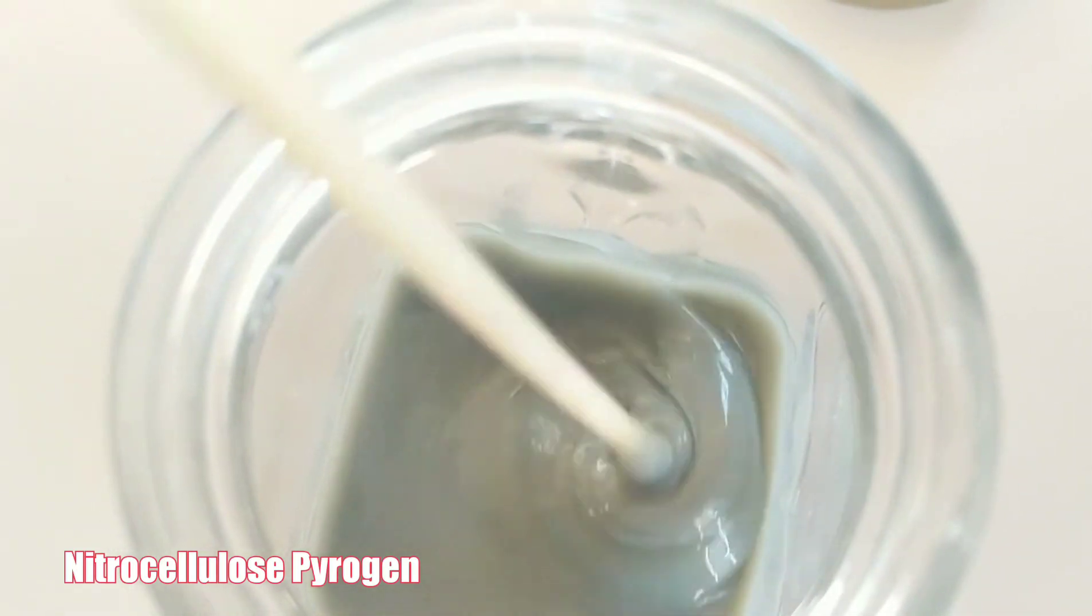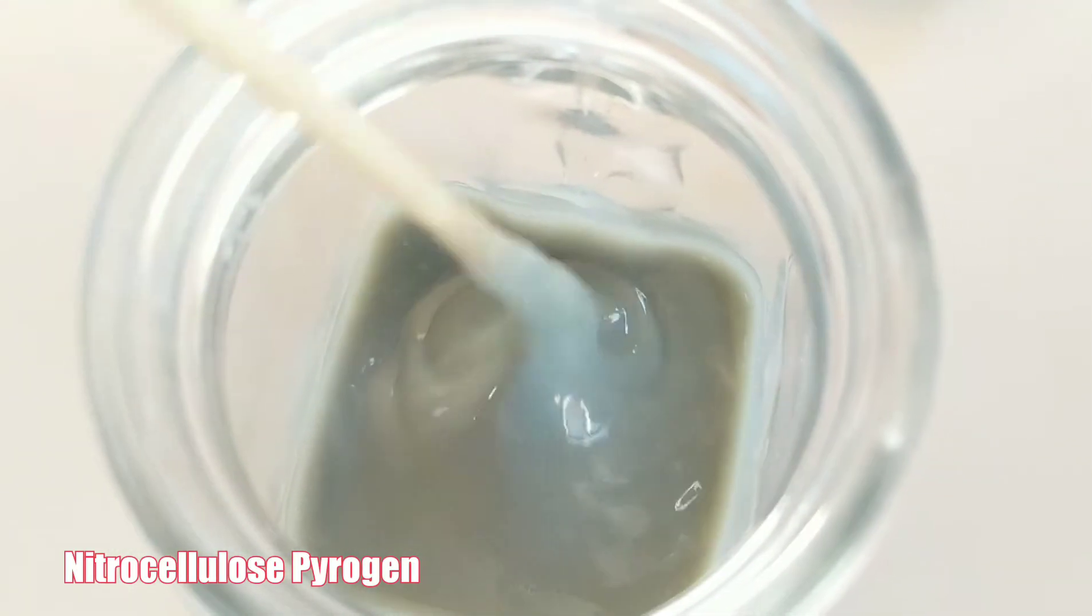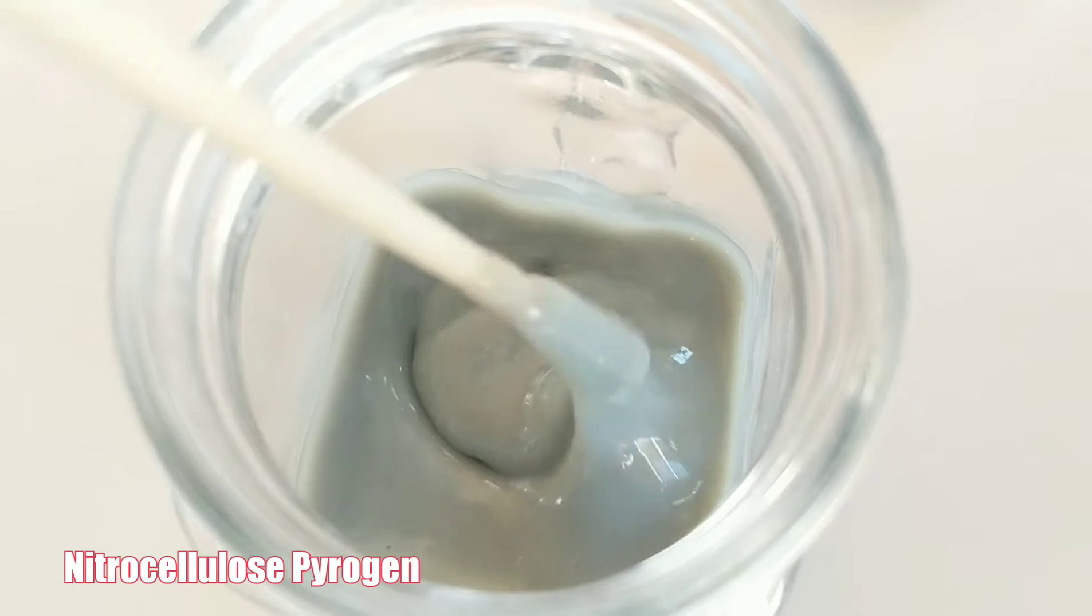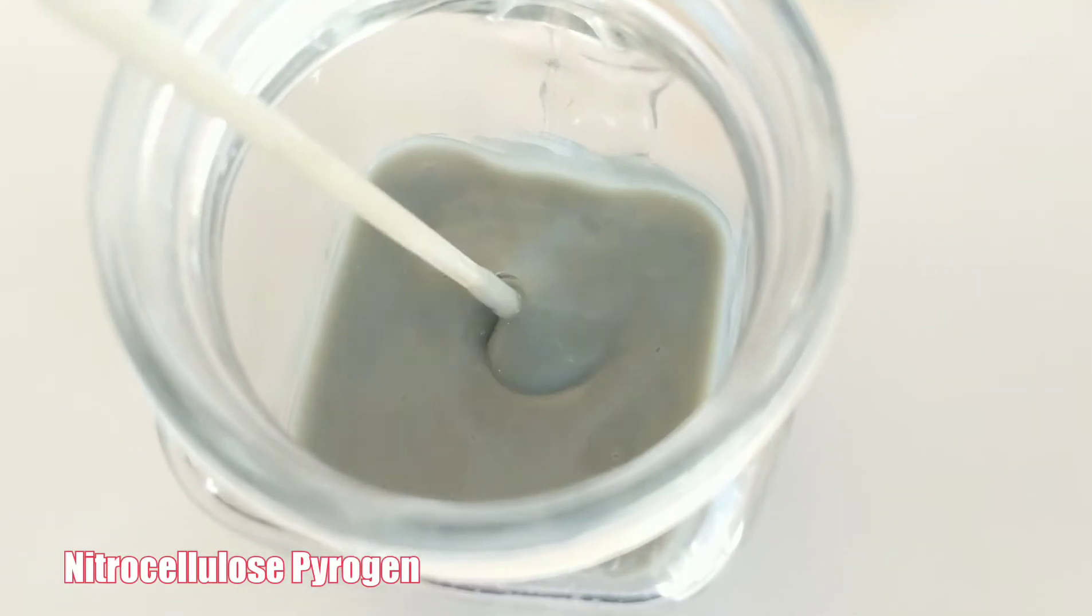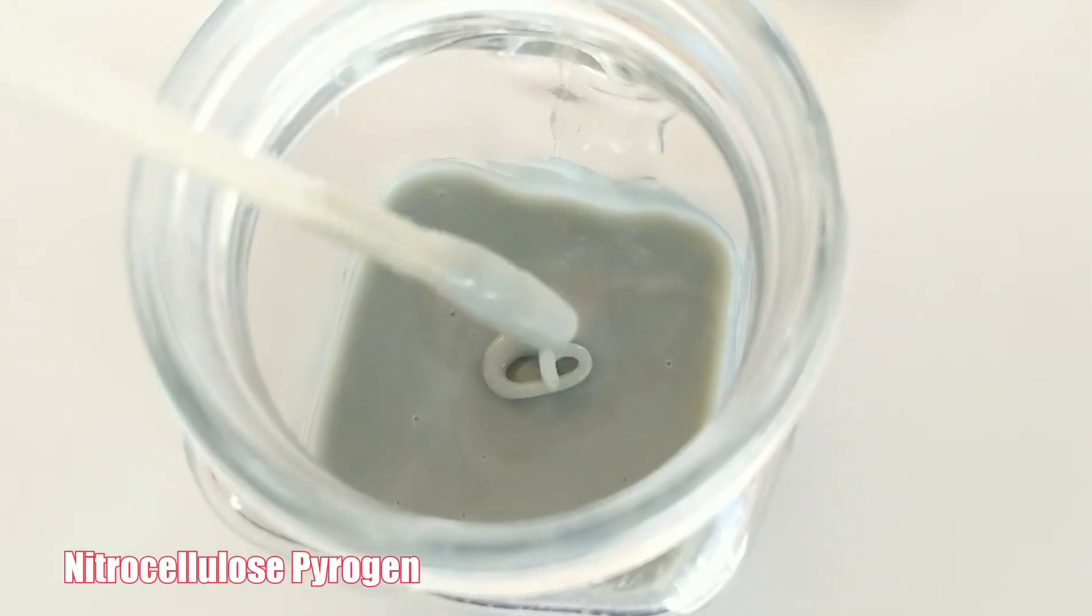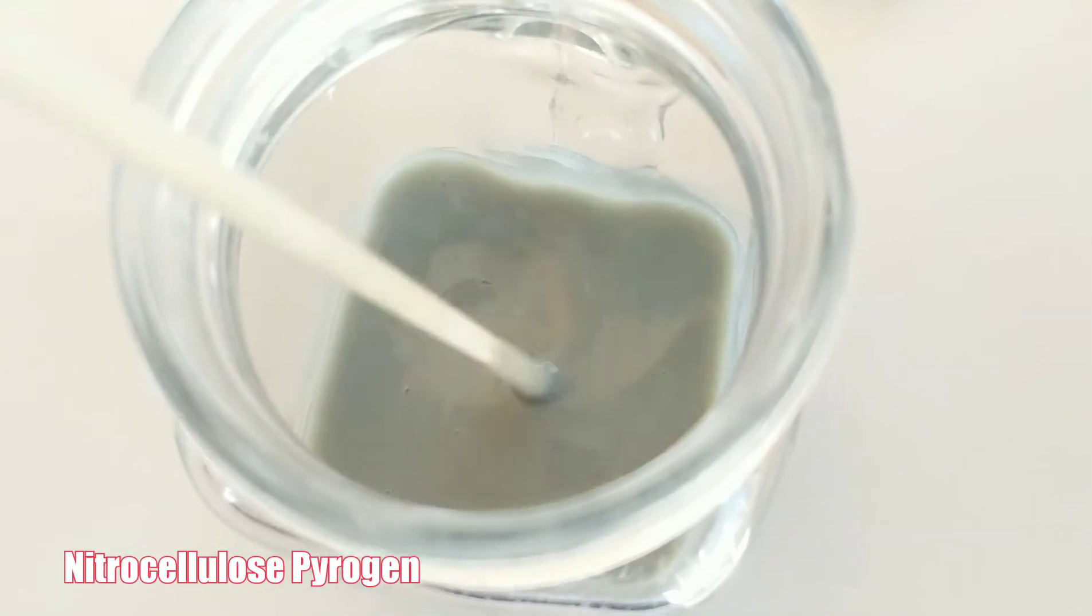I ended up adding about two tablespoons of acetone to get it to the right consistency. This is what we end up dipping our nichrome wire into for our rocket igniters.